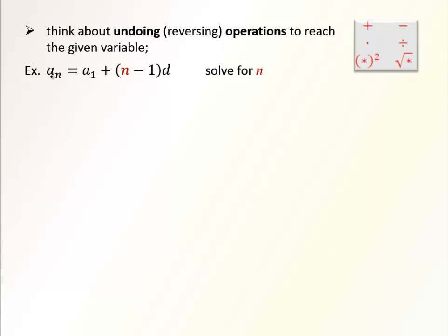Here we have an example. This formula refers to an arithmetic sequence. For instance, we would like to solve this formula for n. n is in this term. We are going to leave this term to the very end, and we are going to move the other term, a₁, to the other side. So formally, we are subtracting a₁ from both sides of the equation, because we are undoing this addition. So we end up with aₙ minus a₁ equals (n minus 1)d.